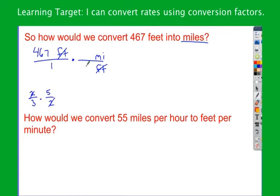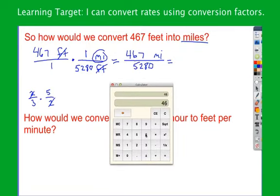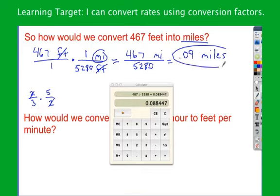This is going to be a unit rate, so I need to figure out: does the one go on top or bottom? I don't know how many miles one foot is, but I do know how many feet are in one mile. The bigger item gets the one — one mile is bigger than one foot, so I put the one with the mile. One mile is 5,280 feet. Now I'm just multiplying fractions: 467 times 1 is 467 miles in the numerator, and 1 times 5,280 is 5,280 in the denominator. Dividing top by bottom, I round that to 0.09 miles. So 467 feet equals 0.09 miles.